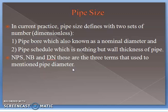In current practice, pipe size is defined with two sets of dimensionless numbers. The first is pipe bore, also known as nominal diameter, and the second is pipe schedule, which defines the wall thickness of the pipe. NPS (Nominal Pipe Size), NB (Nominal Bore), and DN (Diameter Nominal) are the three terms used to refer to pipe diameter.